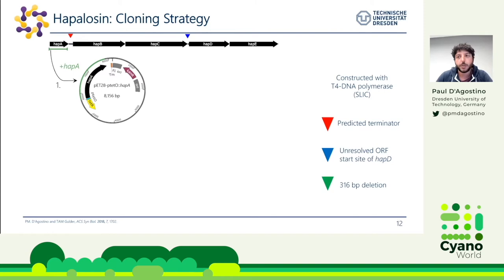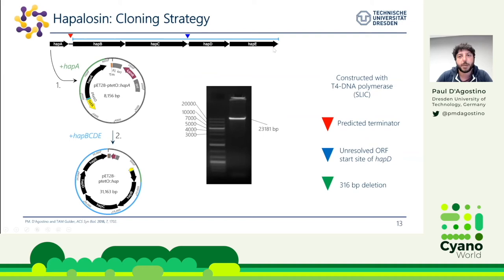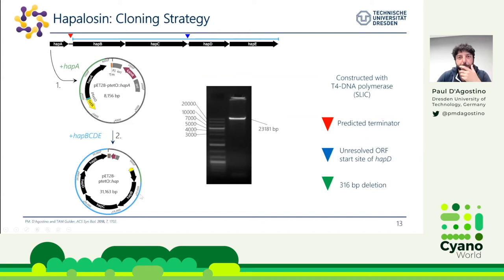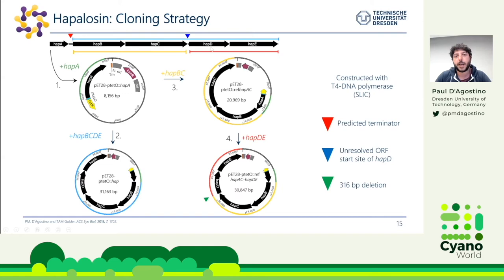To do this, the first thing we did was to look for transcriptional terminators, finding one in the intergenic region between HapA and HapB that needed to be removed. I cloned HapA as a single gene, then amplified HapB through HapE as a single 23 kb PCR product inserted just downstream of HapA, removing the transcriptional terminator. For the second expression vector, I amplified HapB and HapC and inserted them downstream of HapA, then amplified HapD and HapE starting from the shorter ATG open reading frame, deleting the intergenic region and the larger open reading frame.